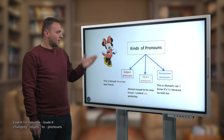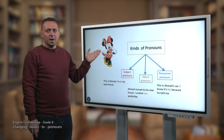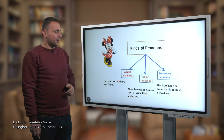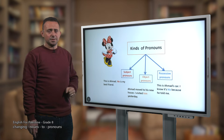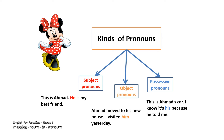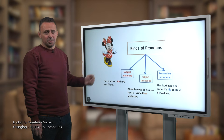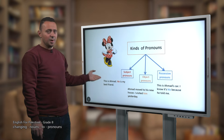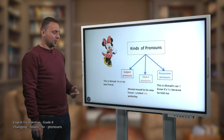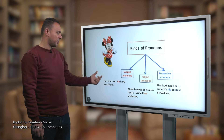Now, what about kinds of pronouns? We have three kinds of pronouns. First, the subject pronouns. For example: 'This is Ahmed. He is my best friend.' Notice — 'he' is a subject pronoun and it refers to Ahmed. So 'he' here is a subject pronoun.